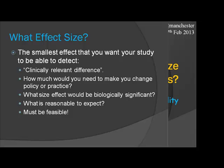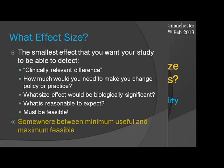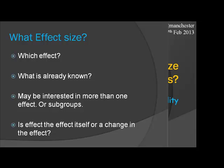Somewhere between the smallest difference that isn't actually of any interest and the largest feasible effect is probably where you need to be — otherwise the whole study doesn't make sense. There's a lot of room for negotiation as you go through a research programme. You may have different outcomes: earlier in a programme you might use a surrogate, easy-to-measure outcome that's much more common, and later on you might do a much larger study to look at a very hard outcome.